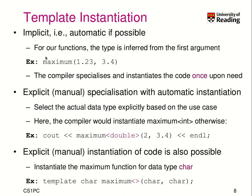In our example with maximum, the compiler knew what data type to use based on the first argument. The first argument was of type T, and when the compiler sees the first argument is a double number, the function should be instantiated for double. The first time the compiler sees this function is needed for a double argument, it specializes and instantiates the code, but it only has to do this once. You can then use the maximum function as often as you like for different double arguments.